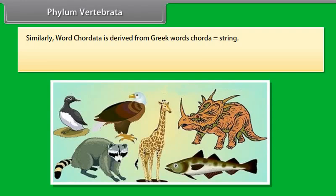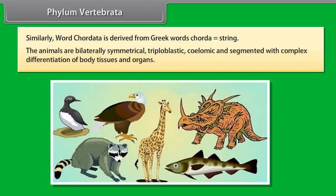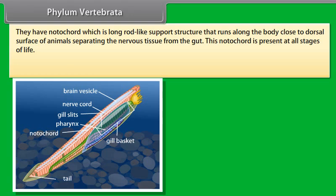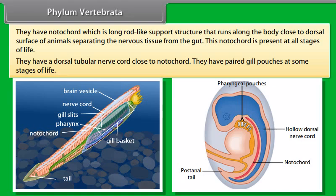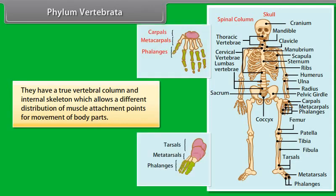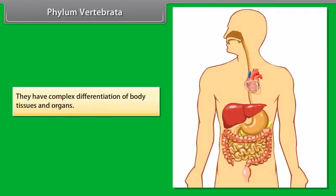Phylum Vertebrata. The word Chordata is derived from Greek word 'chorda' meaning string. The animals are bilaterally symmetrical, triploblastic, coelomic, and segmented with complex differentiation of body tissues and organs. They have a notochord, which is a long rod-like support structure that runs along the body close to the dorsal surface, separating the nervous tissue from the gut. This notochord is present at all stages of life. They have a dorsal tubular nerve cord close to the notochord. They have paired gill pouches at some stages of life. They have a true vertebral column and internal skeleton, which allows different distribution of muscle attachment points for movement of body parts. They have complex differentiation of body tissues and organs.